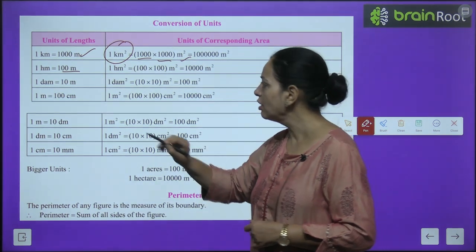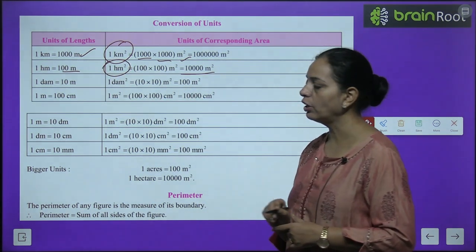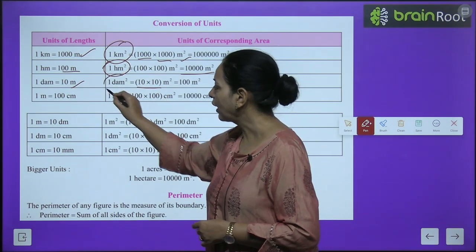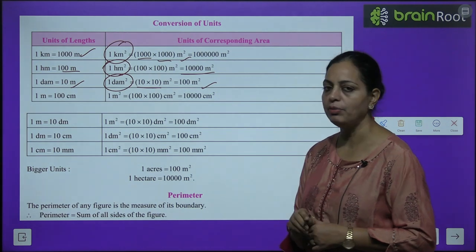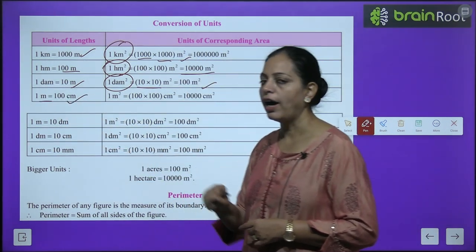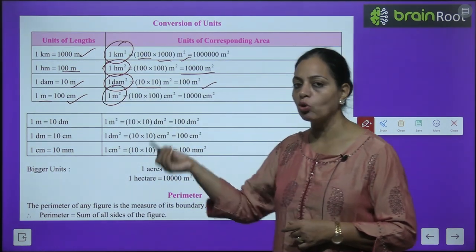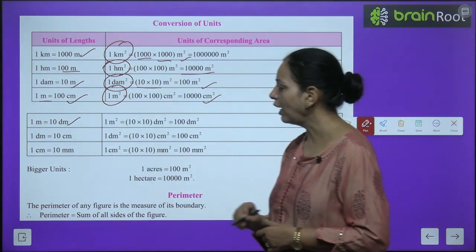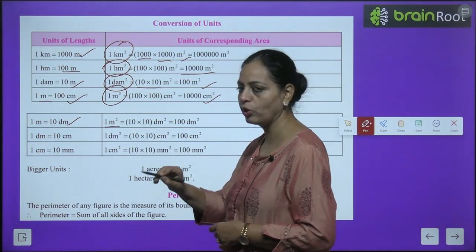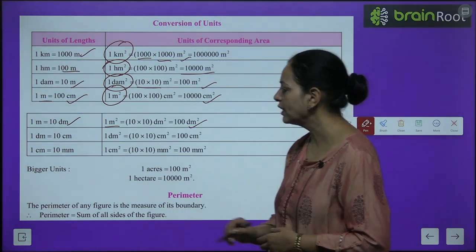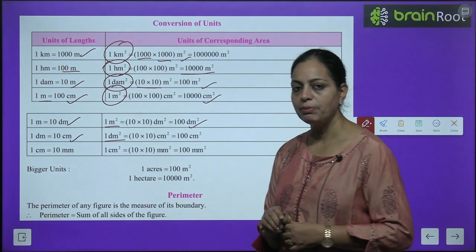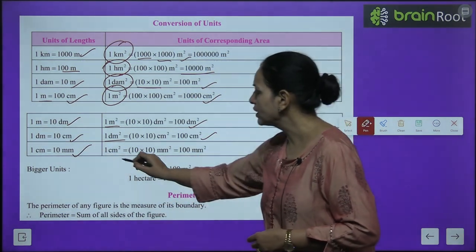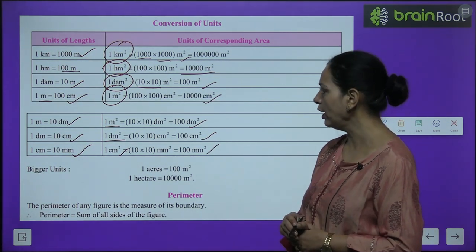One hectometer equals 100 meters, so one hectometer square equals 100 × 100 = 10,000 meter square. One decameter equals 10 meters, so one decameter square equals 100 meter square. One meter equals 100 centimeters, so one meter square equals 10,000 centimeter square. One meter equals 10 decimeters, so one meter square equals 100 decimeter square. One decimeter equals 10 centimeters, so one decimeter square equals 100 centimeter square. One centimeter equals 10 millimeters, so one centimeter square equals 100 millimeter square.